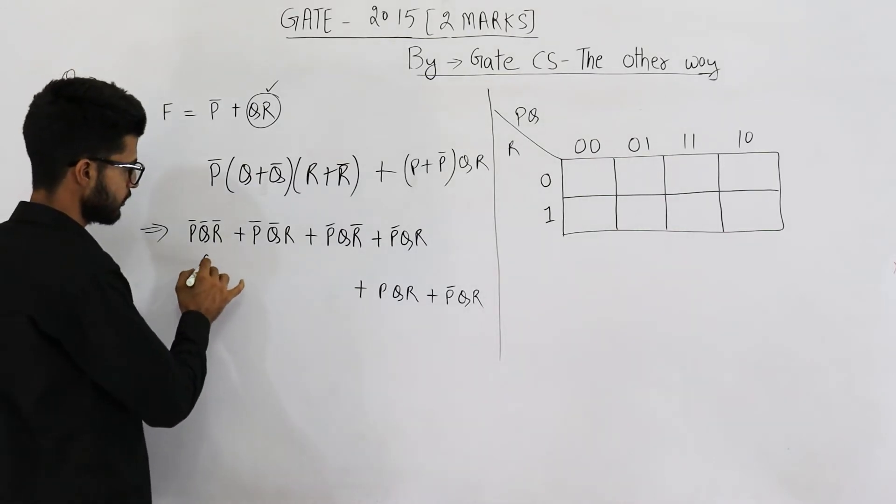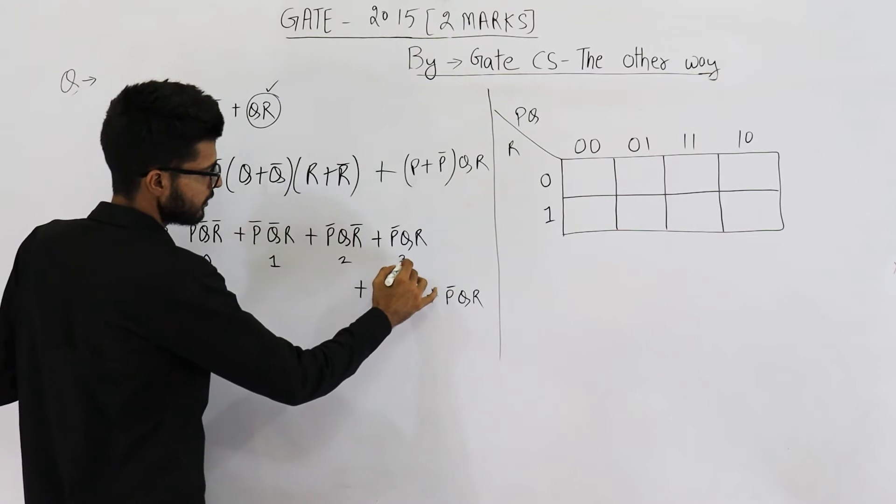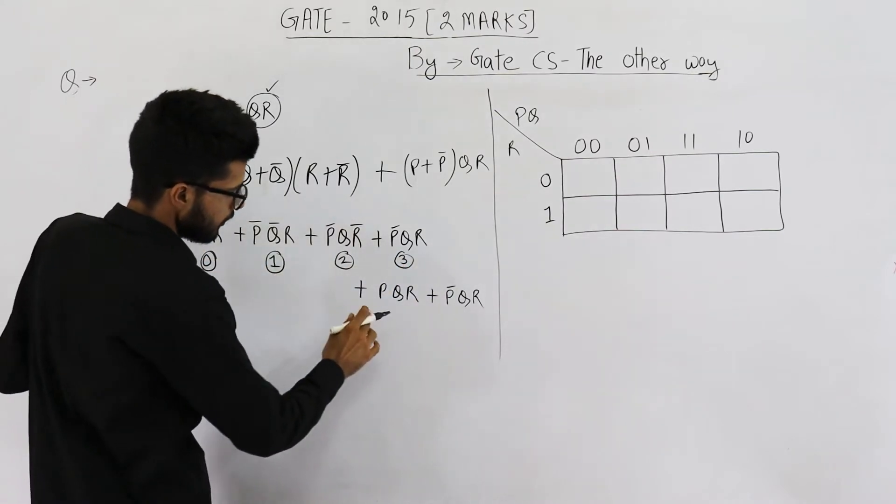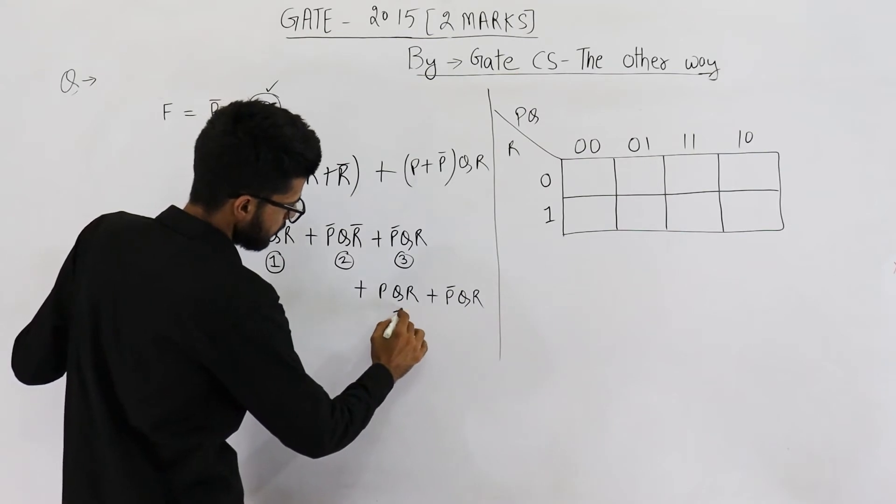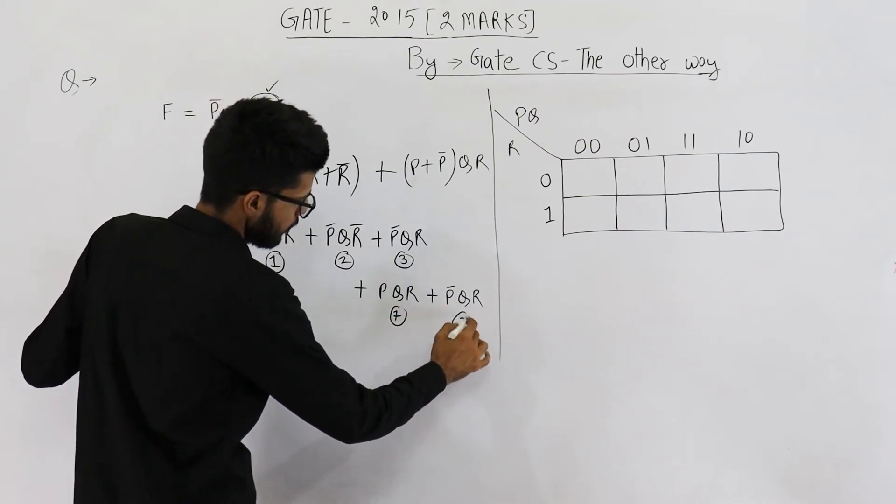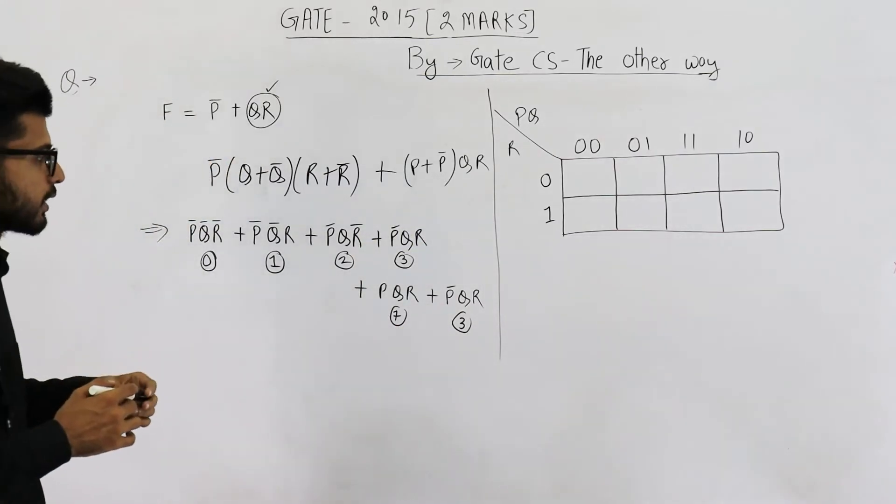So 000, this one will be 0, this is 001, this is 1, this is 2, this is 3. This one will be 111, that means 7, this one will be 011, so this is 3. You can see 3 and 3, it's repeated twice. So we will consider it only once.